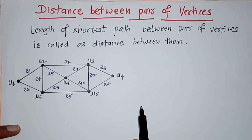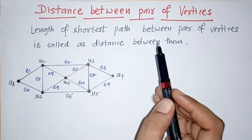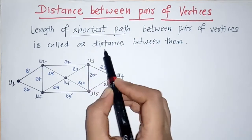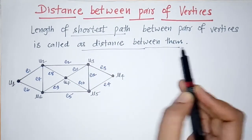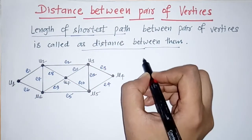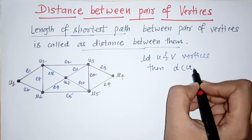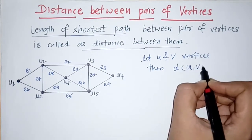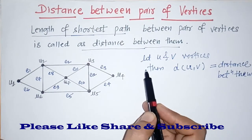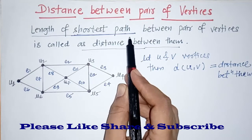Today we are going to see distance between pair of vertices for a given graph. The length of the shortest path between a pair of vertices is called the distance between those vertices. If we have two vertices u and v, the distance between them is denoted as distance(u, v), and it is the length of the shortest path.